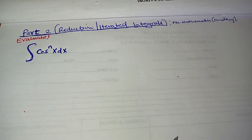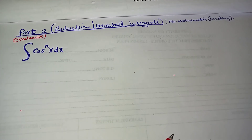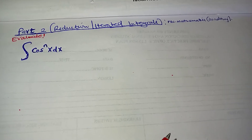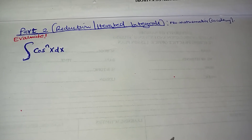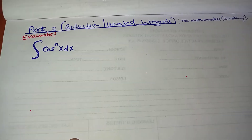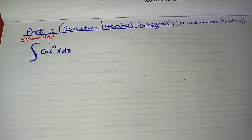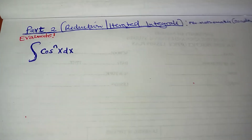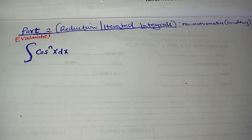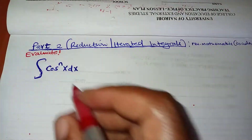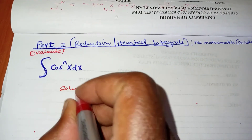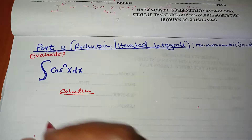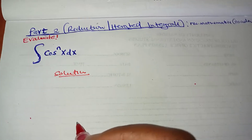Welcome to this second part of my videos on reduction or iterated integrals. This is True Mathematics Academy and my problem here is an integral of cosine of x to the power of n. This is what we're going to use in the recursive relation to come up with the integral for this function. To get started, I'll perform the same trick I did for the sine.